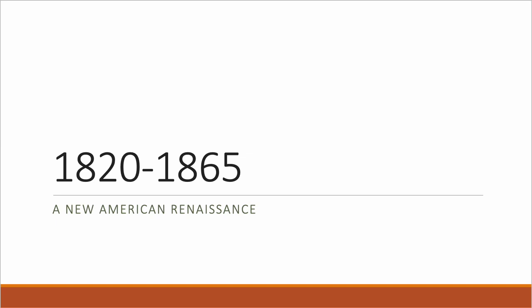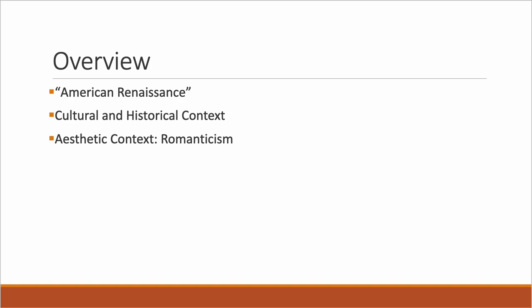In this video, we're going to talk about where the phrase 'the American Renaissance' comes from, and we're going to examine the historical development of this time period as the first real blooming of a truly distinct and separate national literature. We'll discuss the cultural and historical context and the artistic movement known as Romanticism, which is essential to understanding many of the works you'll be encountering in our next few reading assignments.